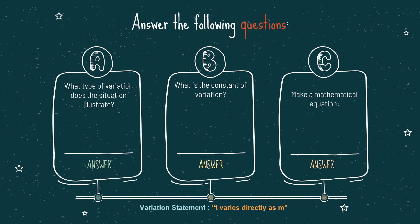Now, let us answer the following questions. For question A: what type of variation does the situation illustrate? From our variation statement, T varies directly as M, where T represents the number of hours and M represents the number of modules. Since the word 'directly' is mentioned, the type of variation the situation illustrates is direct variation.